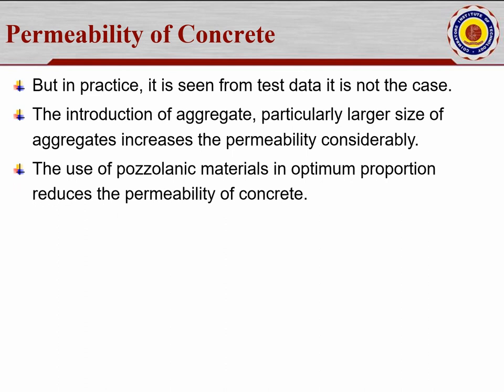The use of pozzolanic materials in optimum proportion reduces the permeability of concrete. Many pozzolanic materials are available nowadays, starting from fly ash and metakaolin, and even fibers such as glass fibers. Depending on the economy and importance of the project, pozzolanic materials can be adopted in the proper manner to reduce the permeability of the concrete.